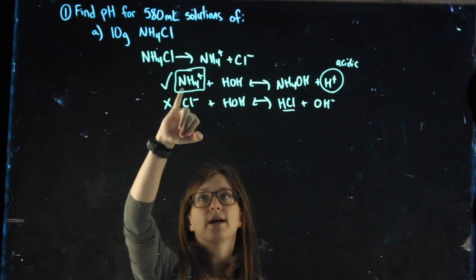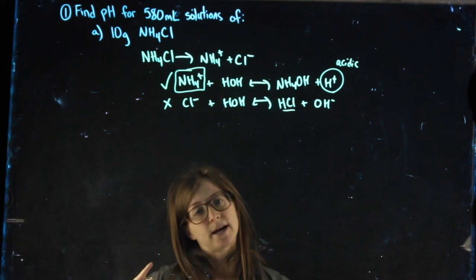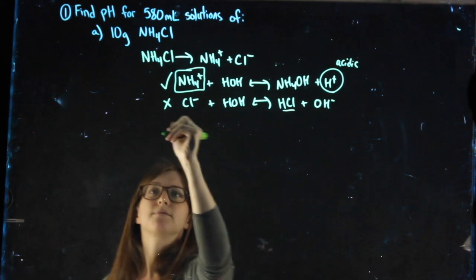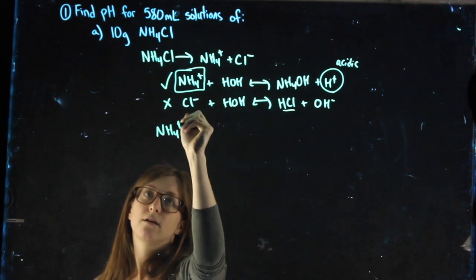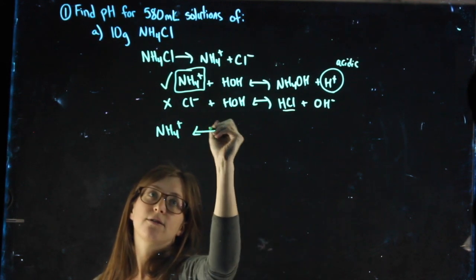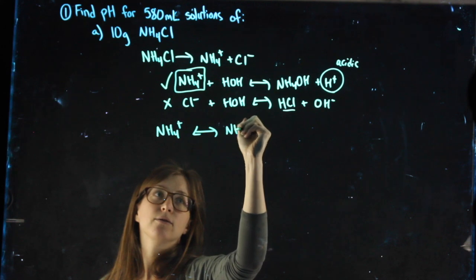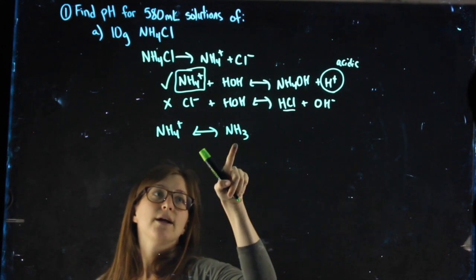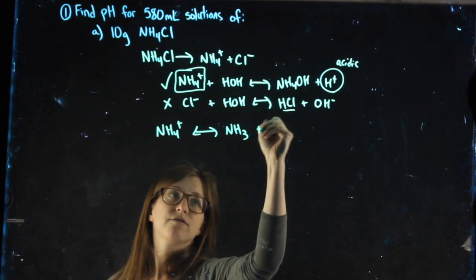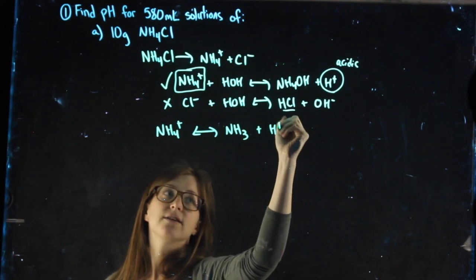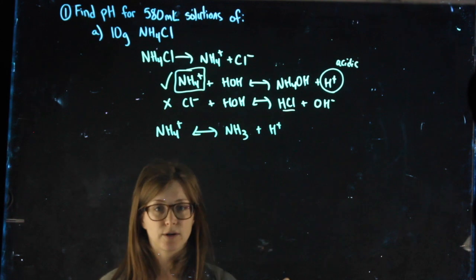So now I'm doing a weak acid problem using NH4+. I dissociate the weak acid using equilibrium arrows. One H falls off, leaving everything else left over.